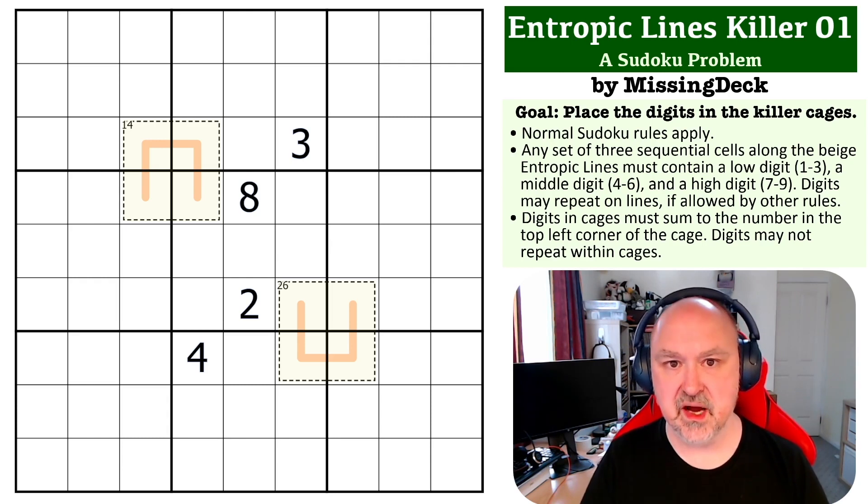And killer cages, of course, cannot contain repeat digits. And the digits in the cage must sum to the number in the top left corner of the cage.